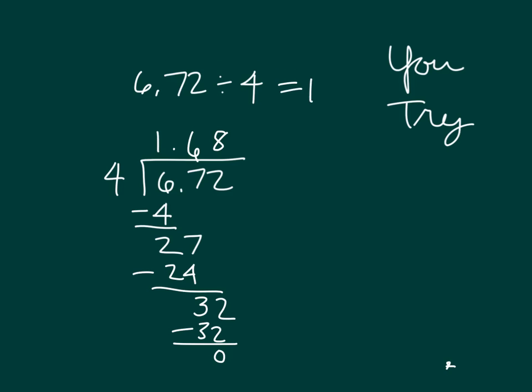How would I check my work if I was running a check for this? Right, I would multiply 1.68 by 4. 4 times 8 is 32. Regroup a 3. 4 times 6 is 24, plus 3 is 27. Regroup a 2. 4 times 1 is 4, plus 2 is 6. And place my decimal point. So my answer does check.